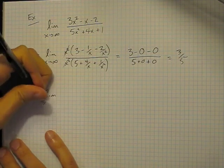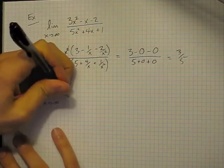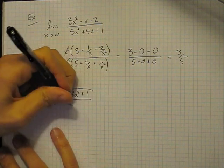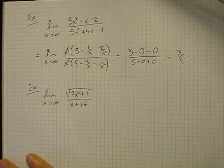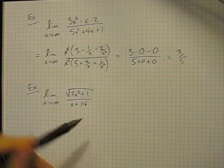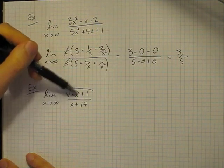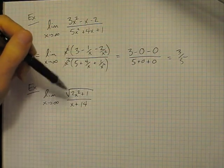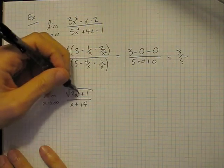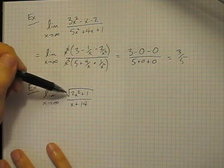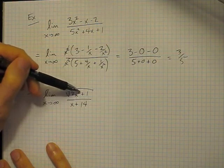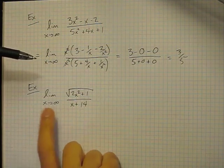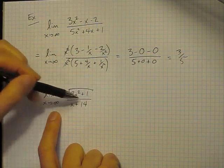Let's take a look at the limit as x goes to infinity of the square root of 2x squared plus 1 divided by x plus 14. You might be tempted to say, look at the highest power of x in the numerator and denominator — there's a 2 and there's a 1, so it's probably 2. Well, in fact, that's not quite the reason why this works out as it does. The highest power of x in the top is x squared but inside a square root symbol, so the highest power really, asymptotically when x is very large, behaves like x.